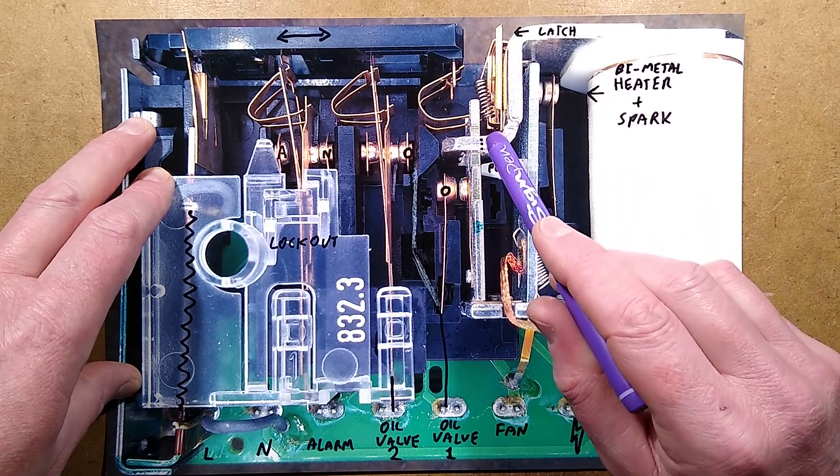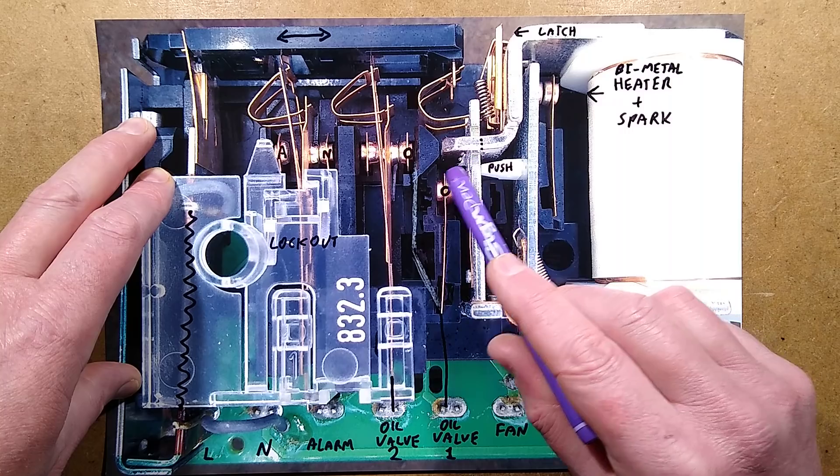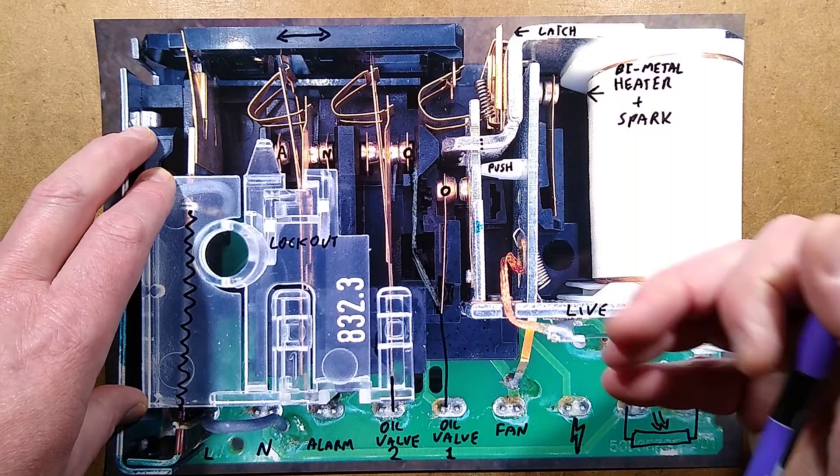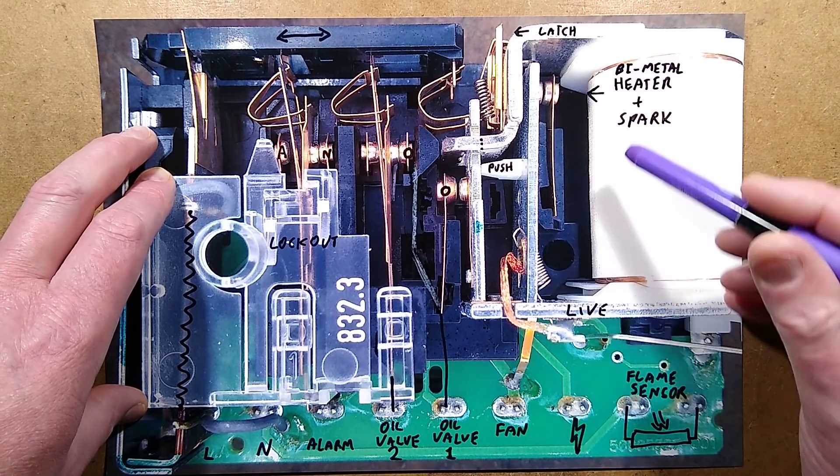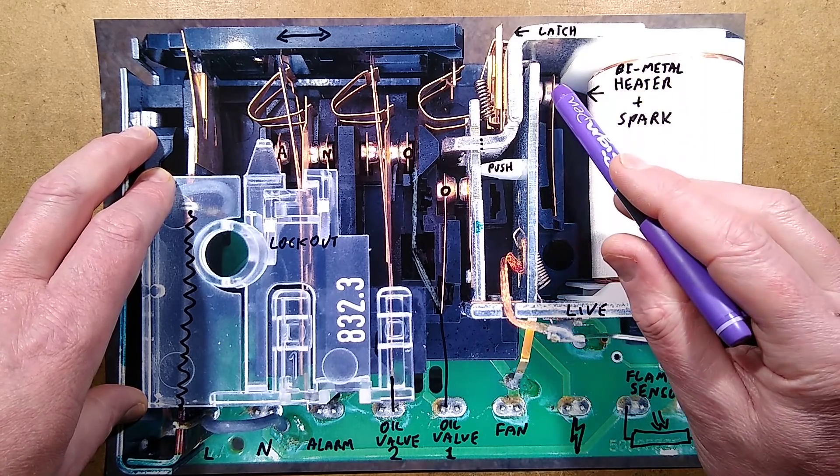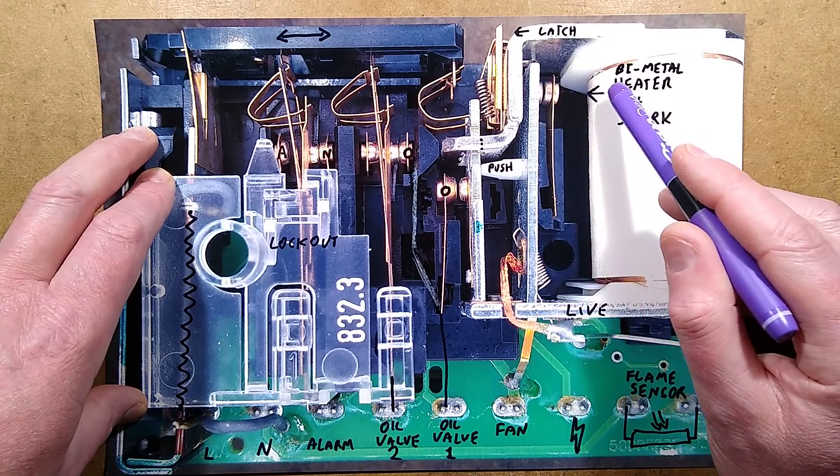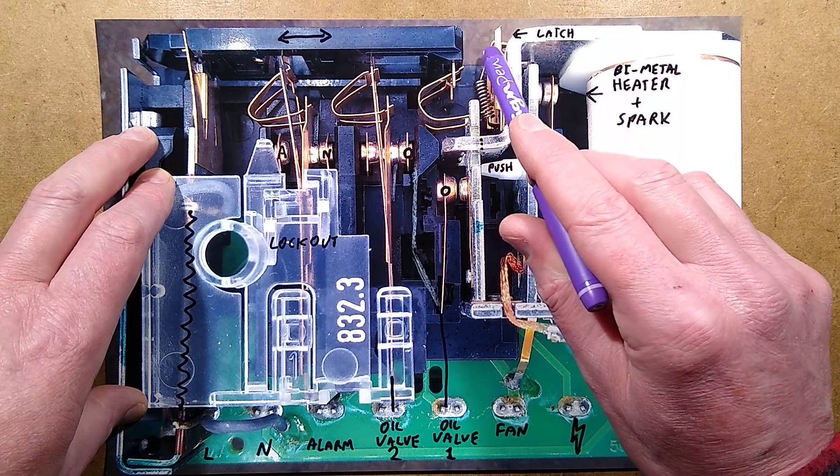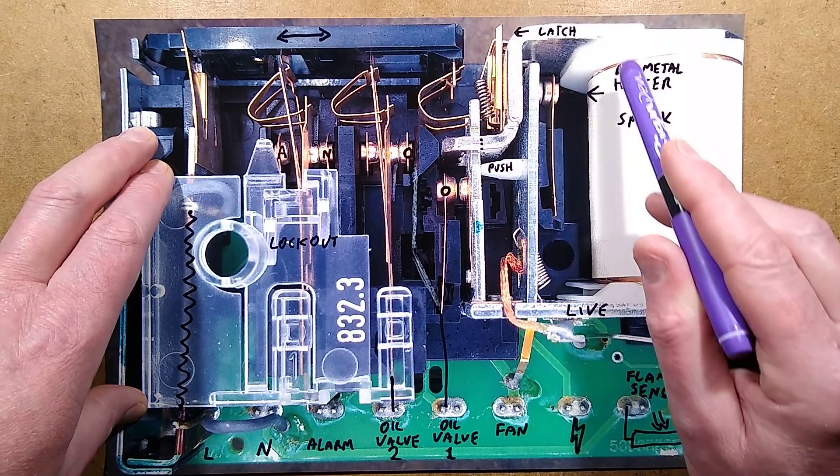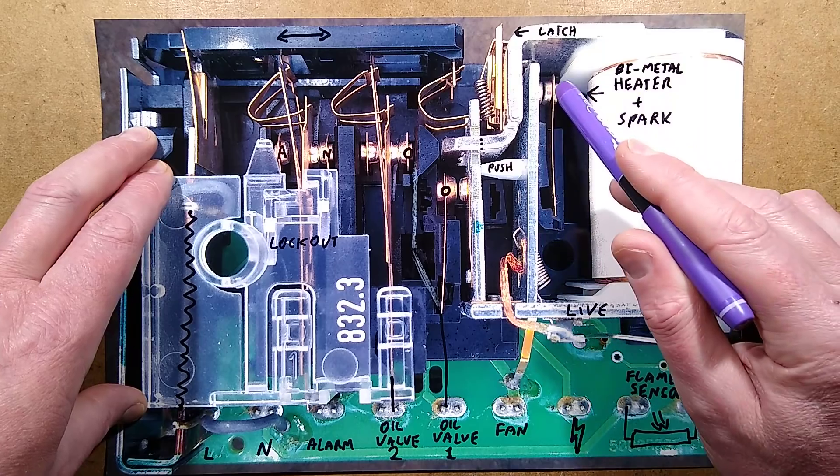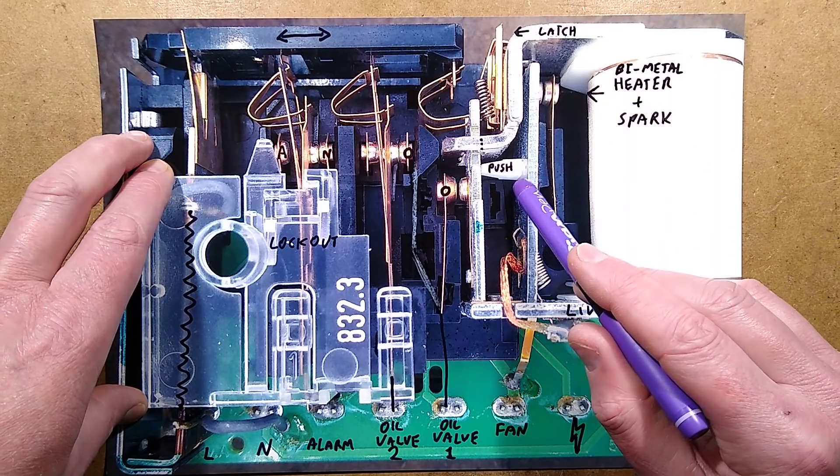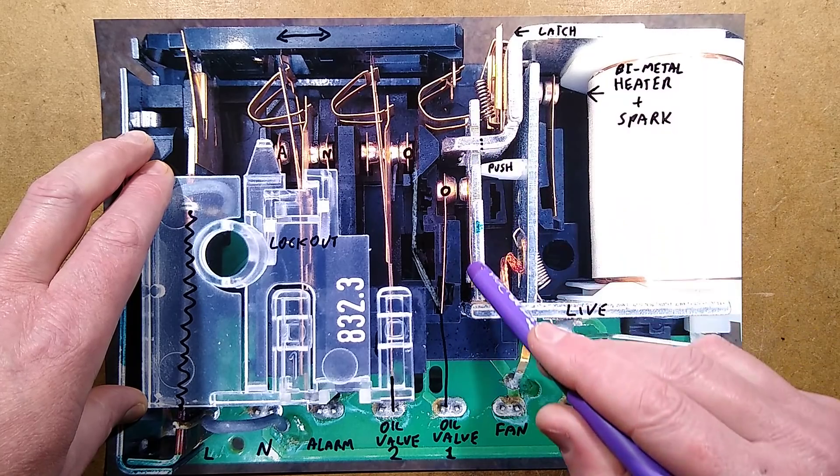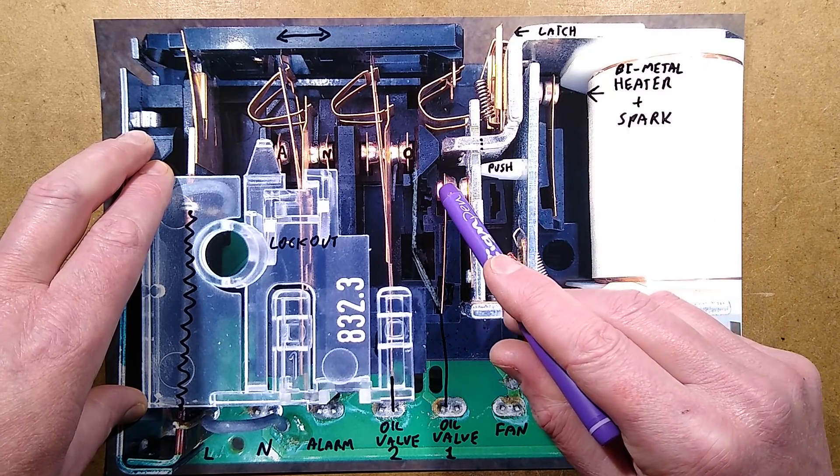But if everything's going to plan and this is not energized, then as this travels across, it clicks this contact over, click, makes power to the oil valve one, and that then starts spraying the oil out. It ignites. Then this coil comes in. And as the thing travels up to the end, it gives that short time delay. It finally hits this little candle lever latch, and that clicks over fully.